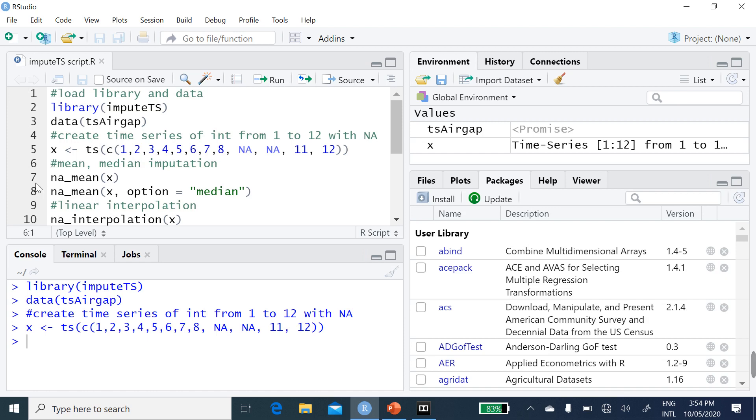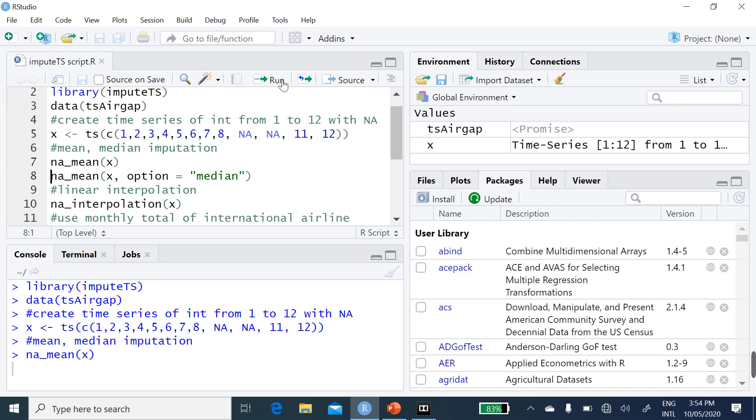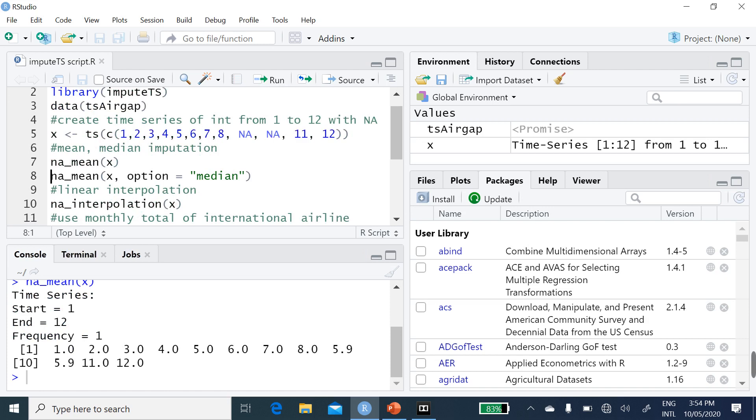For our mean imputation is na.mean x. So, we run it. We have seen it. So, this is what I'm saying. This is the 5.9, 5.9, which is the mean that has replaced those missing values now.